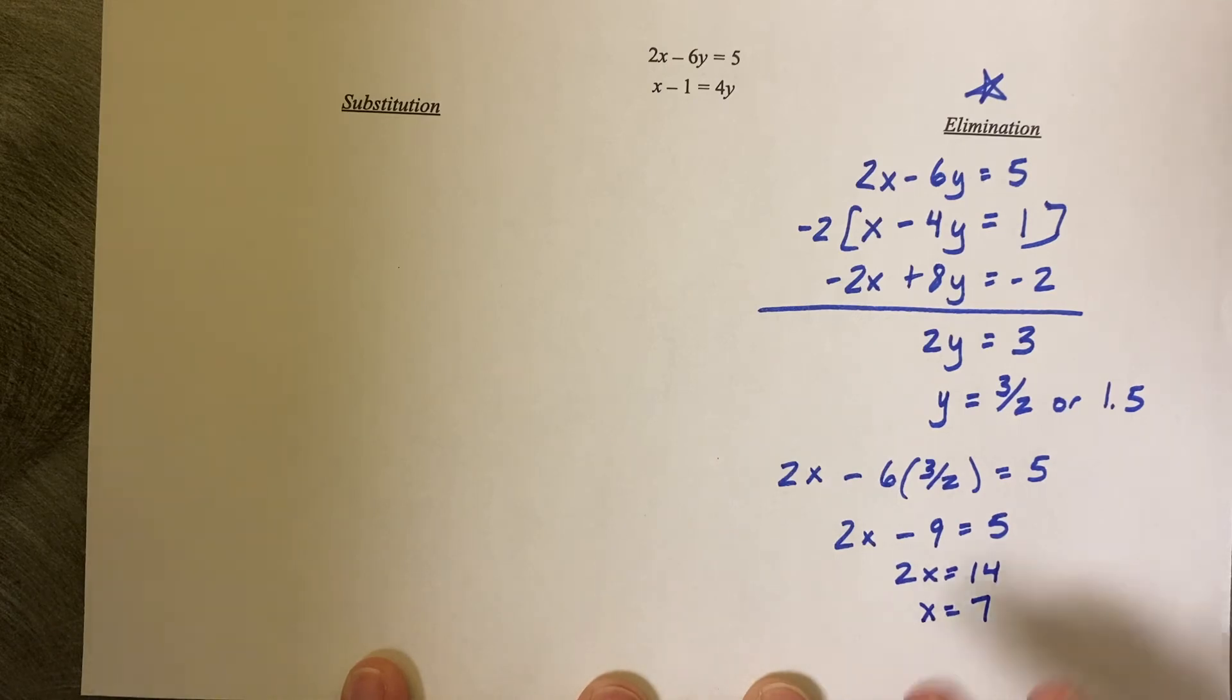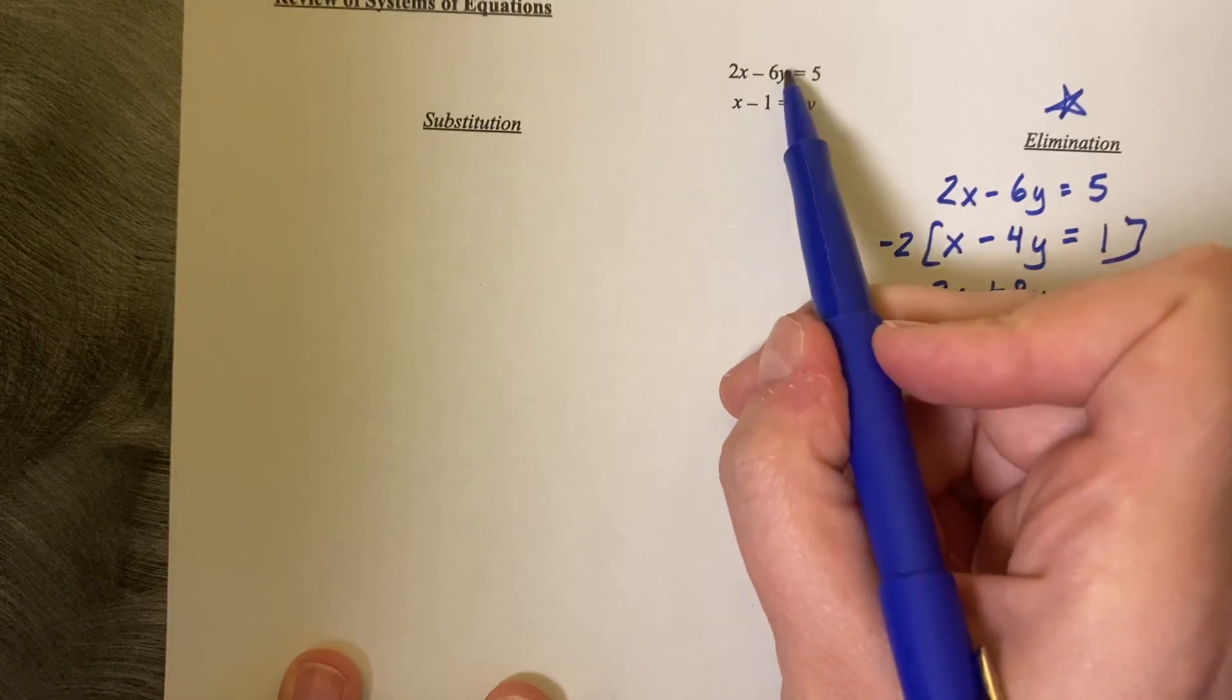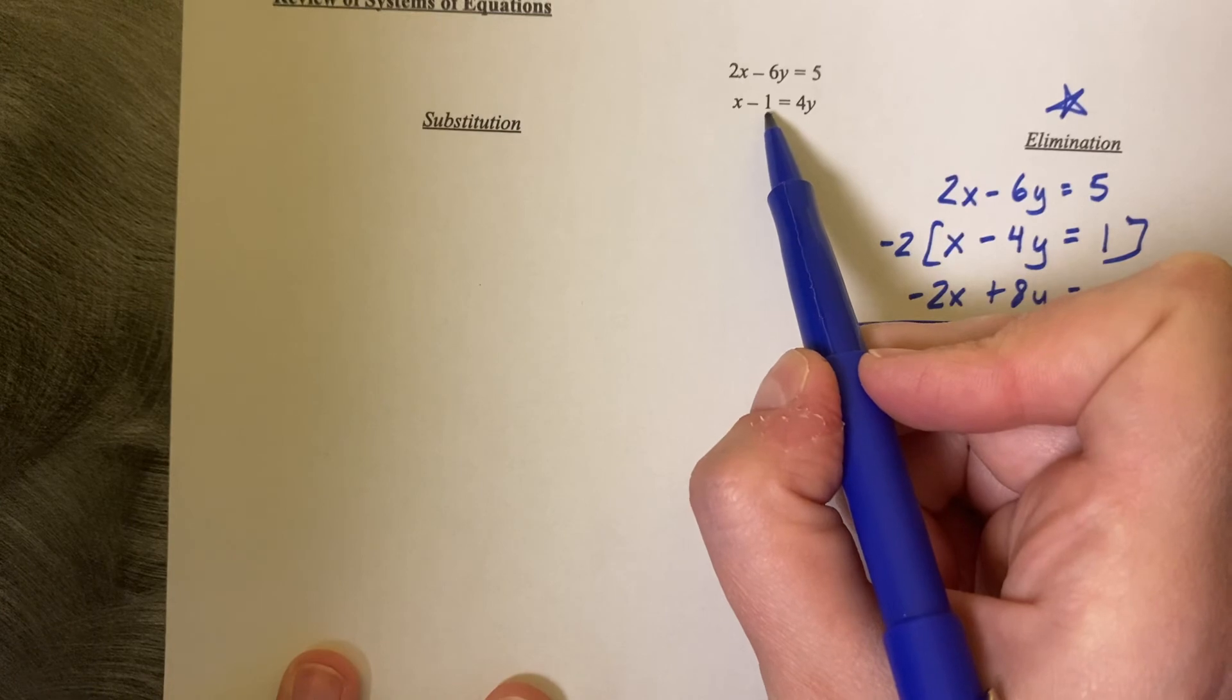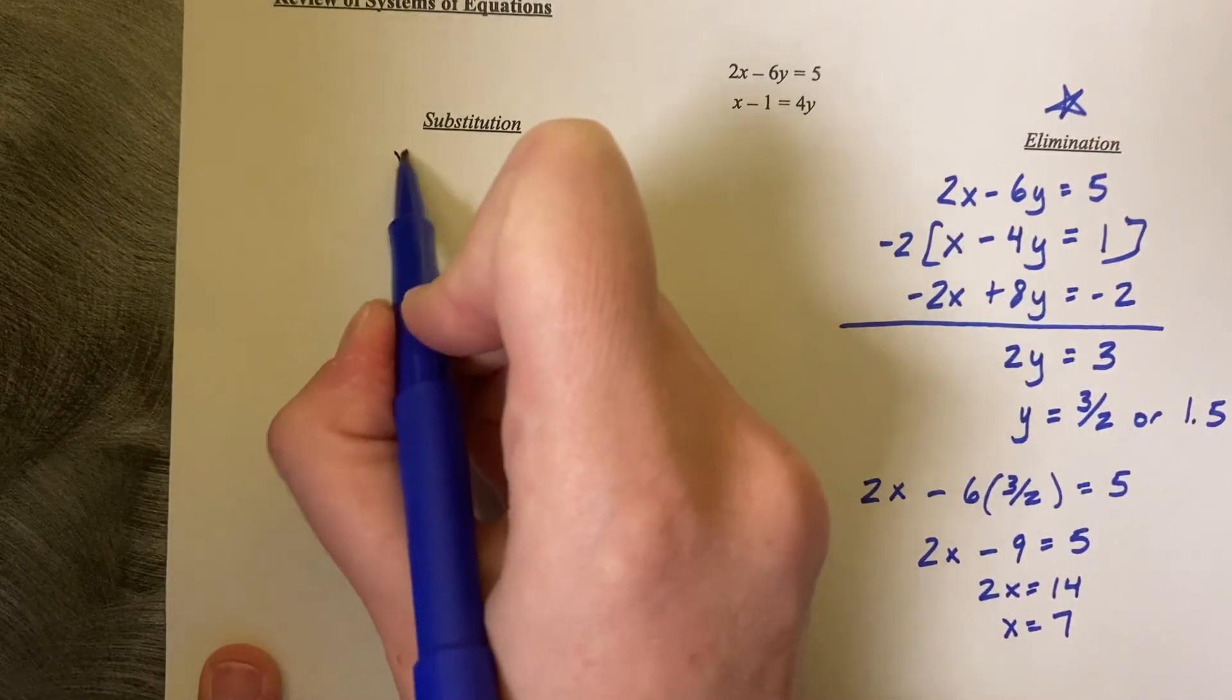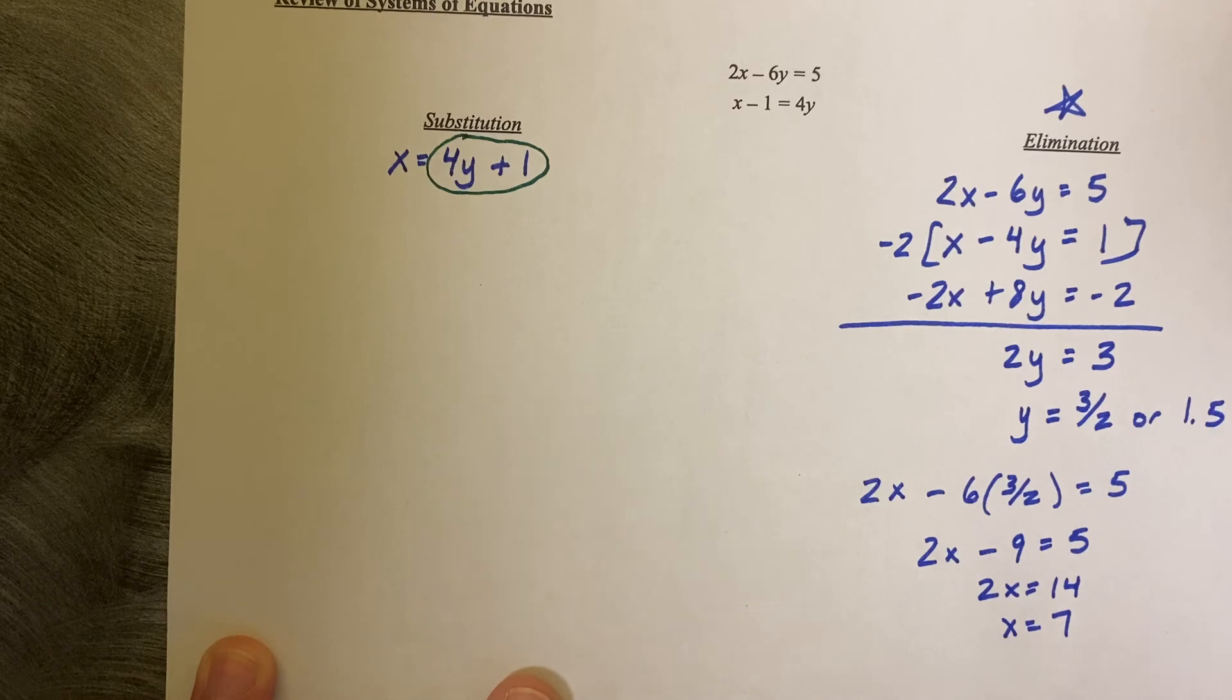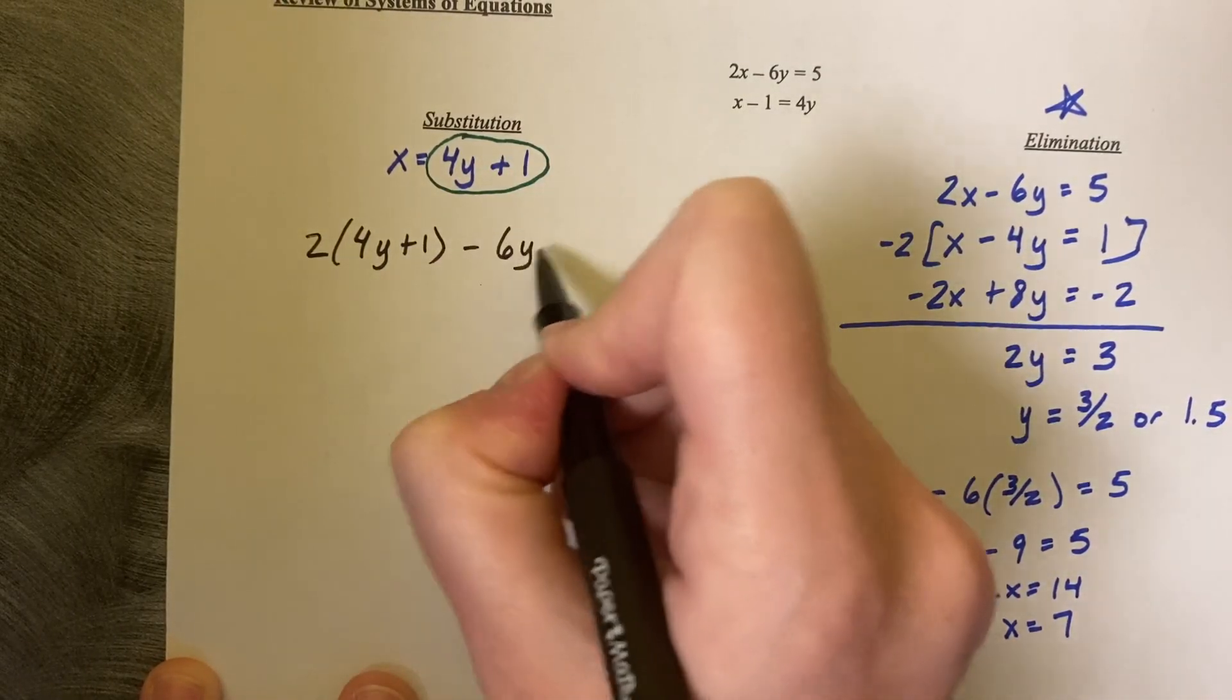So that's the one we've been using the most but I do want to show you a second method which is called substitution. You need to have one of the variables isolated, one of them alone. So on this one the X and the Y are on the same side so I don't think I'm going to mess with that top equation but this bottom equation the X is almost alone. It's almost alone but it is attached to a negative 1. So if we add 1 to the other side we can have X equals 4Y plus 1 and now this expression gets substituted in for X in your first equation.